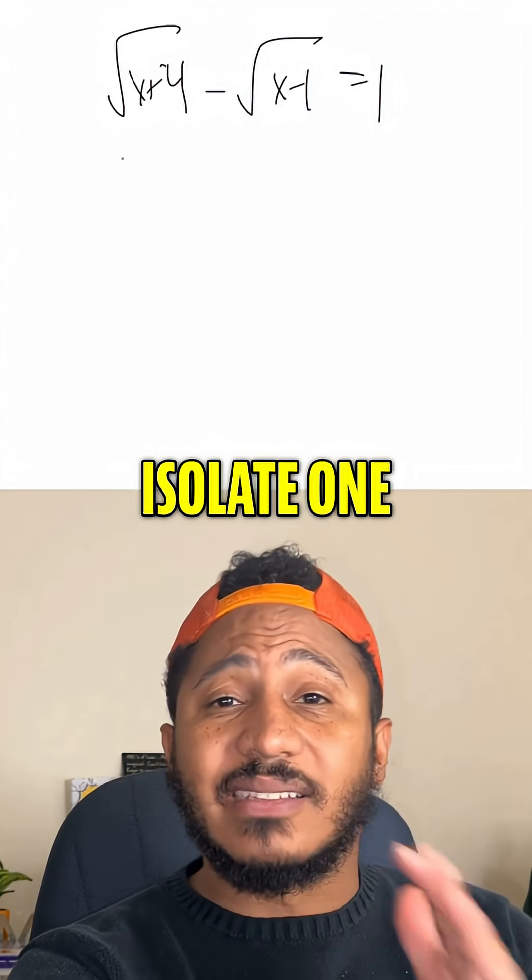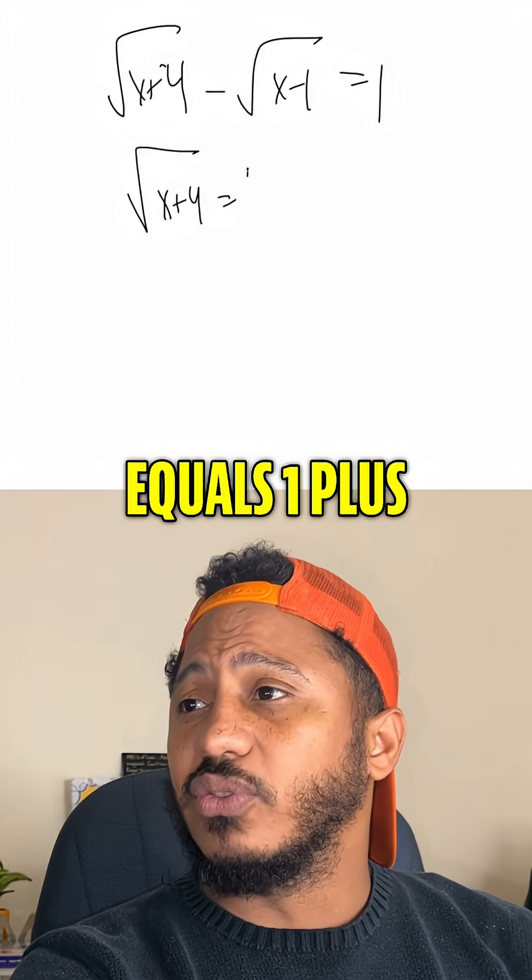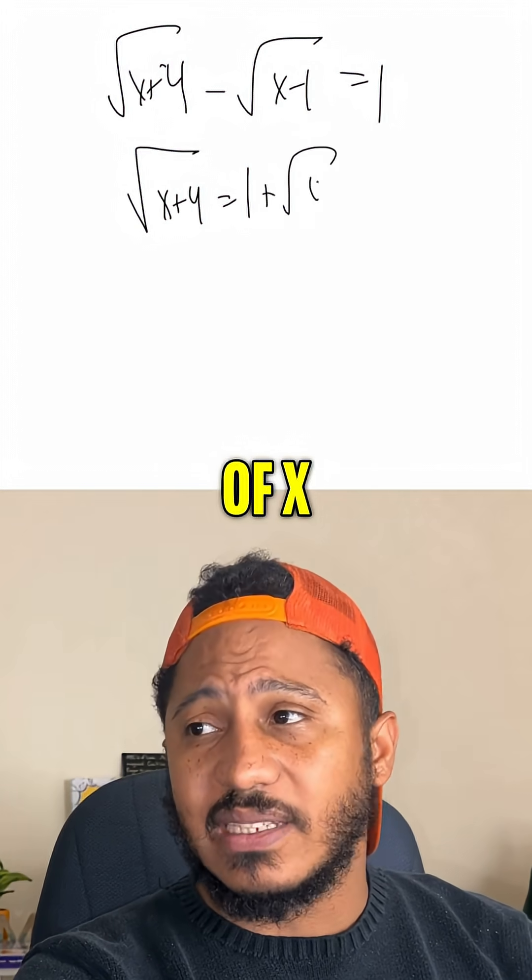So, all we solve this is, first of all, I isolate one of the radicals. If I get one of the radicals by itself, it's the square root of x plus 4 equals 1 plus the square root of x minus 1.